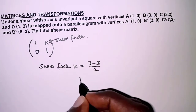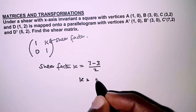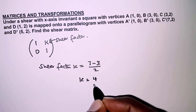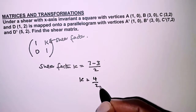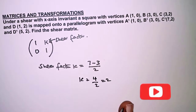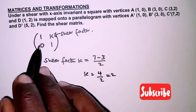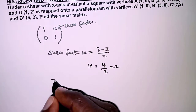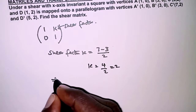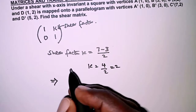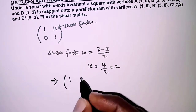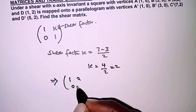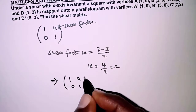So k is equal to 4 over 2, which is 2. Substituting this into the matrix, the shear matrix becomes [1, 0; 2, 1].